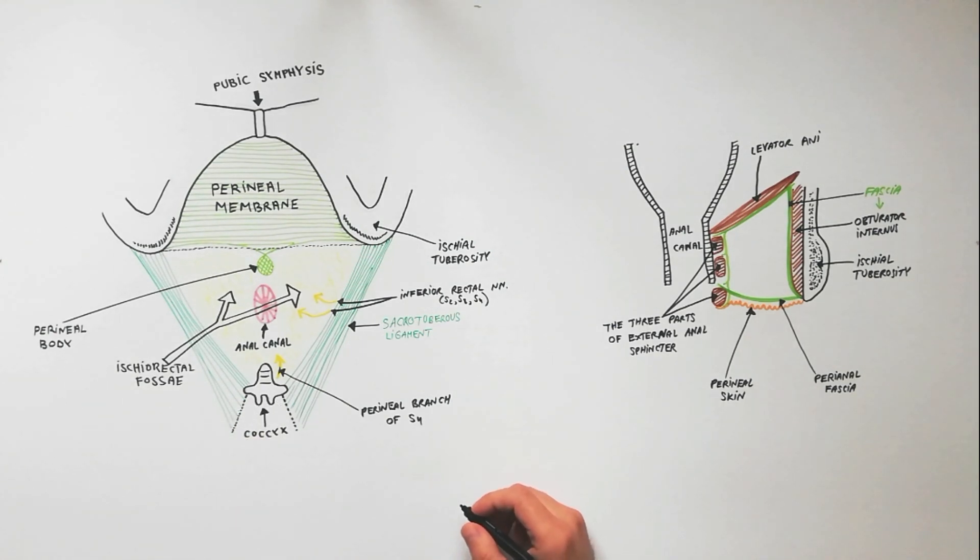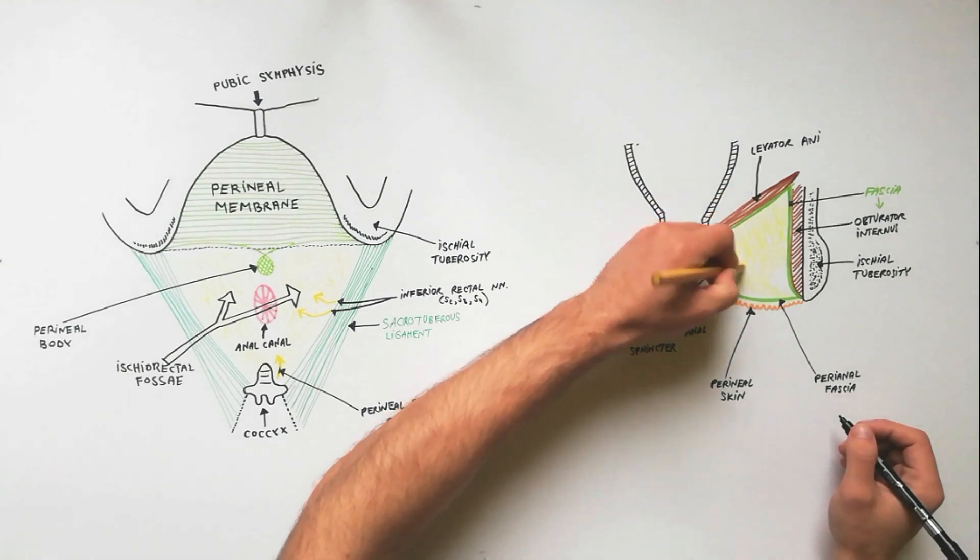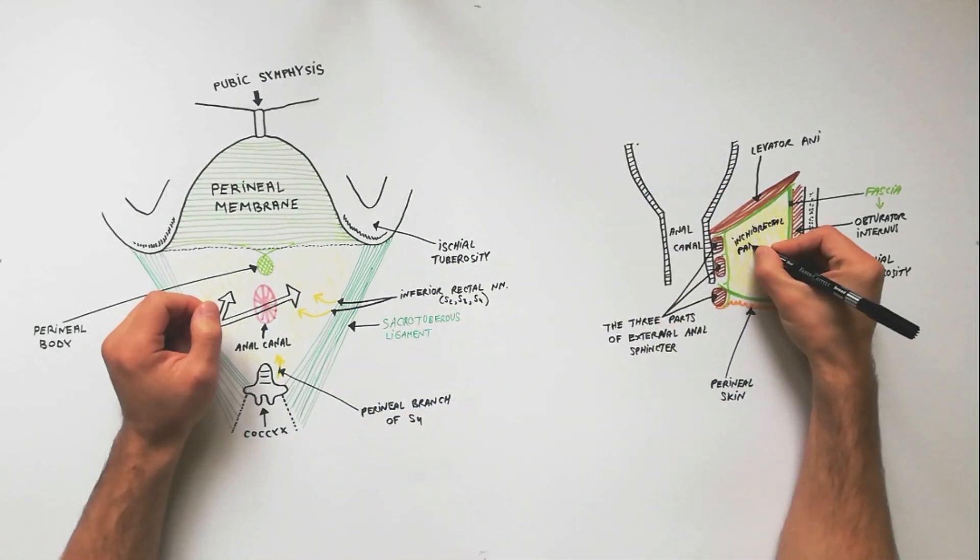Now we are in a position to indicate the contents of ischiorectal fossae. Filling the ischiorectal fossae is the ischiorectal pad of fat.